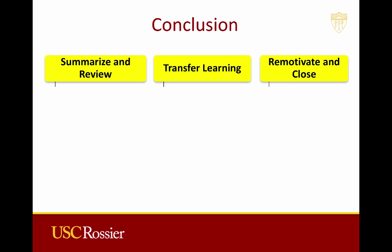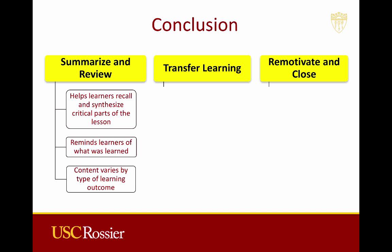The conclusion of the lesson allows learners to review and elaborate on recent learning to use in further application. It supports synthesis of material covered and the consolidation of new learning. The conclusion includes the following events: summarize and review, transfer learning, and re-motivate and close. Summarize and review ensures learners recall and synthesize the critical parts of the lesson into a memorable and applicable whole. It reminds learners of what was just learned and restates the gist of the lesson. The content varies depending on type of learning outcome, and both declarative knowledge and psychomotor skills seem to require the most review. Spaced out practice of new learning seems to facilitate retention and recall.